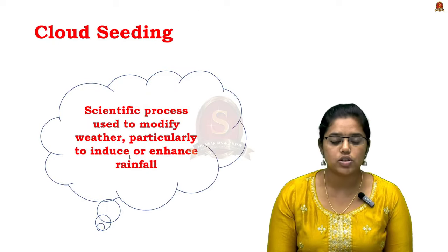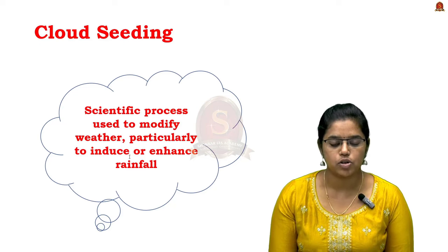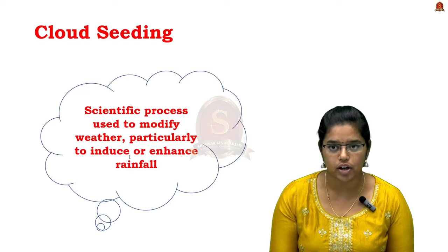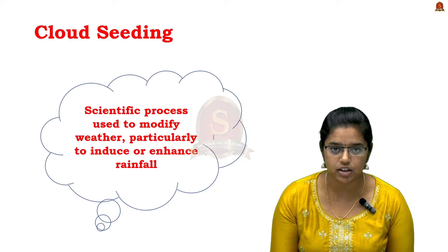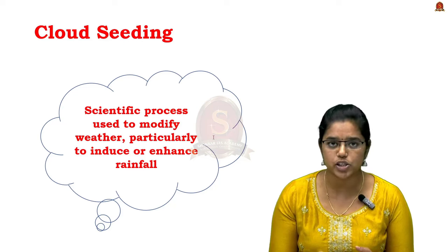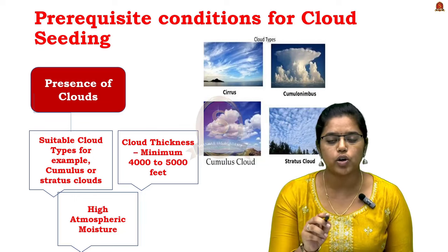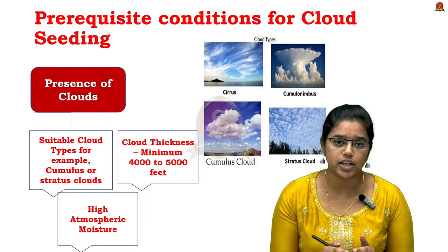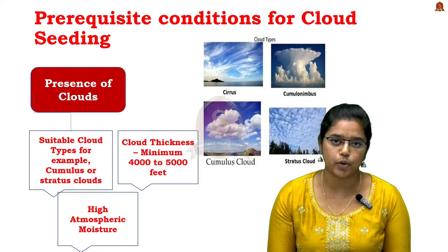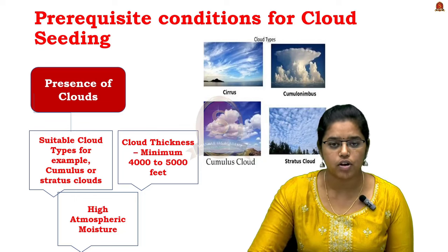Cloud seeding is a scientific process used to modify weather, particularly to induce or increase rainfall in a particular region. They disperse certain substances such as silver iodide, potassium iodide, and sodium chloride — note these chemicals as they are a possible prelims question. These substances are dispersed into the air, which encourages cloud formation and subsequently leads to precipitation. The prerequisite conditions for cloud seeding include the type of clouds — specifically cumulus or stratus clouds, which have high moisture content. Super-cooled clouds with liquid water below the freezing point are especially essential for the seeding process.